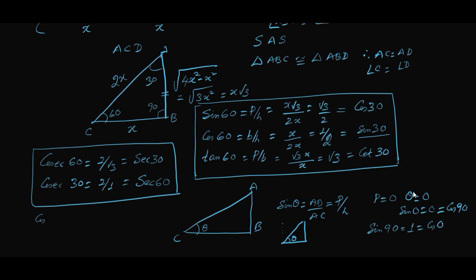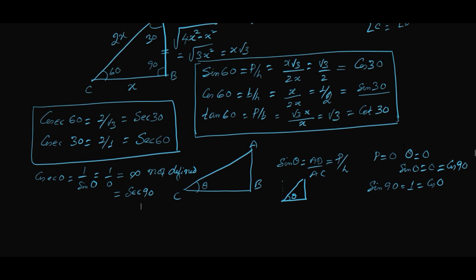Since sin 0° equals 0, cosecant 0° equals 1/0, which is not defined — or we call it infinity. When cosecant 0° is not defined, then automatically secant 90° is also not defined, as the two angles are complementary. Cosecant 90° is the reciprocal of sin 90°, which is 1, and that must equal secant 0°.